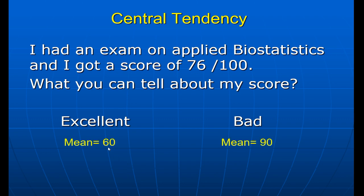If the mean is 60, it means most people cluster around 60 and I got 76, so I'm excellent. However, if the mean is 90, I am far below the mean. See how different means give you different answers. Do not answer this question without knowing the mean.